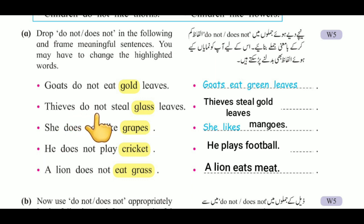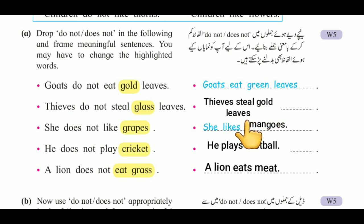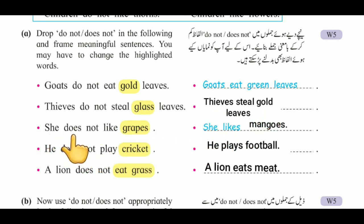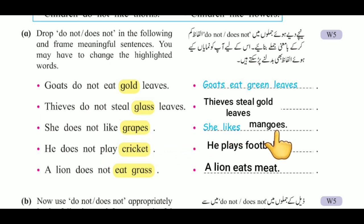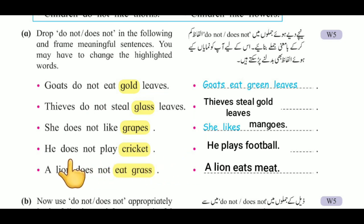Second: 'Thieves do not steal glass leaves' — we made 'Thieves steal gold leaves,' removing 'do not' and replacing 'glass' with 'gold.' Third: 'She does not like grapes' — remove 'does not' and replace 'grapes' with 'mangoes': 'She likes mangoes.' Fourth: 'He does not play cricket' — remove 'does not' and replace 'cricket' with 'football': 'He plays football.'